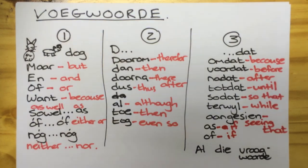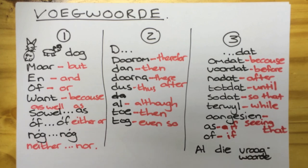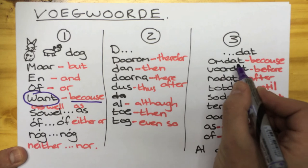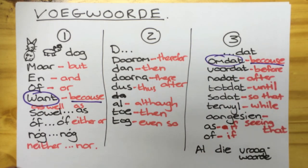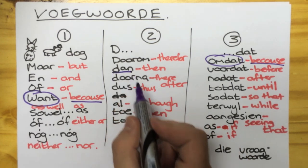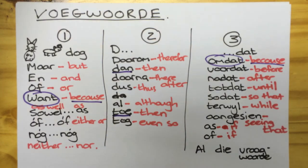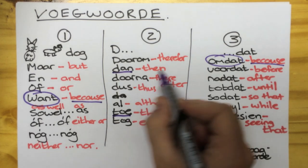Al die vraagwoorde behoort aan groep 3 — all the question words belong to group 3. Important to note: want, meaning because, is the same as omdat, even though want belongs to group 1 and omdat to group 3. Also, dan and toe, both in group 2, mean the same thing, except toe is used in the past and dan is the present conjunction.